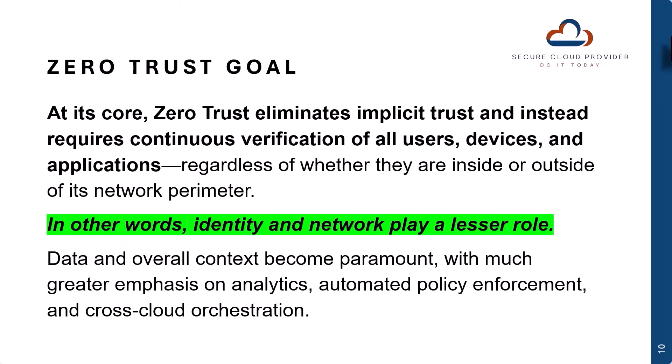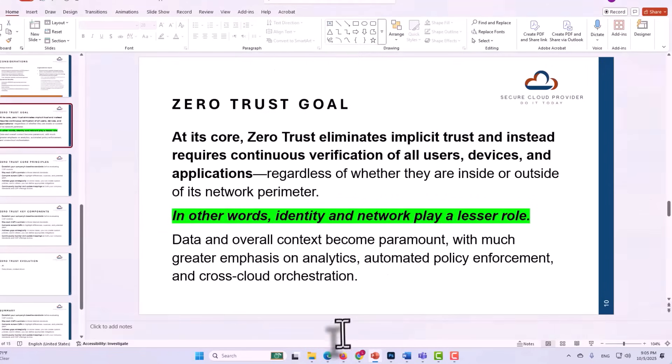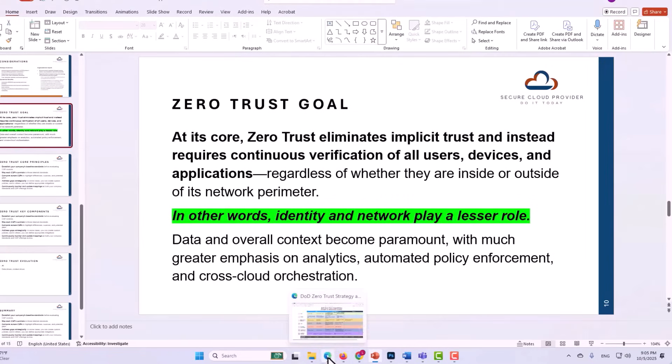At its core, what zero trust is trying to do is to establish the same best practices for every single user, device, and application, regardless of that entity's identity, and regardless of that entity's network. In other words, identity and network play a much lesser role in this much larger context.